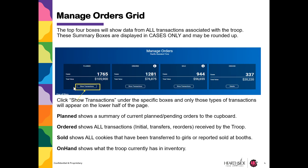The top four boxes will display data from all transactions associated with the troop. These summary boxes are displayed in cases only. You can click Show Transactions under each specific box, and only those types of transactions will appear on the Manage Orders grid.